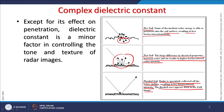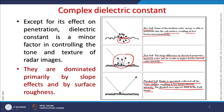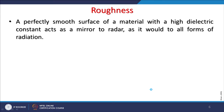The dielectric constant, except for its effect on penetration, is a minor factor in controlling the tone and texture of radar images. These are dominated primarily by slope effects and surface roughness. For a perfectly smooth surface of high dielectric constant material, the surface acts as a mirror to radar — a calm water body may behave like a complete mirror.